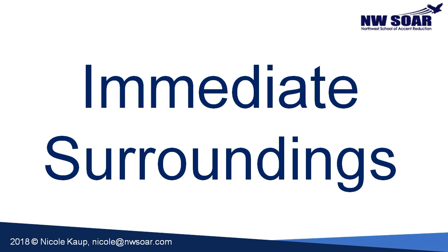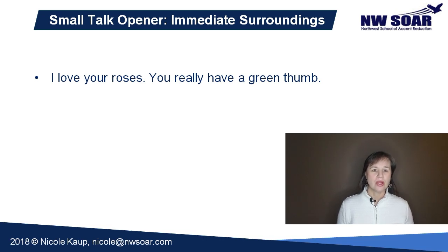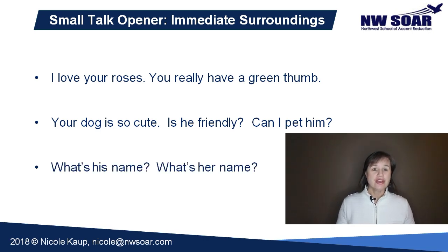A third way to start a conversation is to talk about something in the immediate environment — meaning something that you currently see or are experiencing. If, for example, you're walking and you see your neighbor is in his yard, you might tell him how beautiful his garden is. You can say, 'I love your roses. You really have a green thumb.' To have a green thumb is an expression meaning that someone is a good gardener. Also while out walking, you'll probably run across many dogs and their owners. You might say, 'Your dog is so cute. Is he friendly? Can I pet him?' You may follow that with, 'What's his name?' Note that we use the pronouns he and she with our pets — don't use 'it.' So if the dog is female, the owner will probably correct you and say 'she,' and then you can say, 'What's her name?'